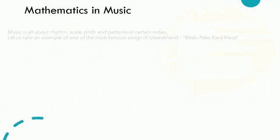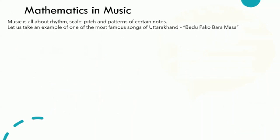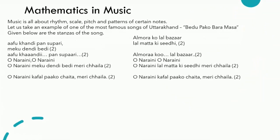Now coming to music. Music is all about rhythm, scale, pitch, and patterns of certain notes. By rearranging the seven notes of music in different orders, we can form different songs. Let us take an example of one of the most famous songs of Uttarakhand called Bedu Pako Bara Masa. Given below are the stanzas of the song.